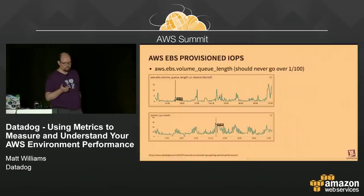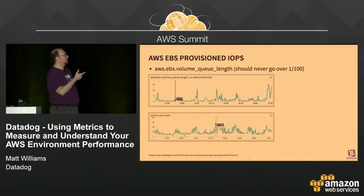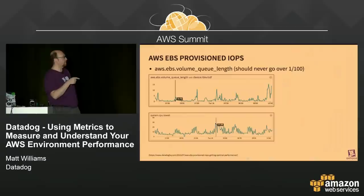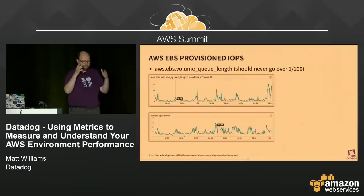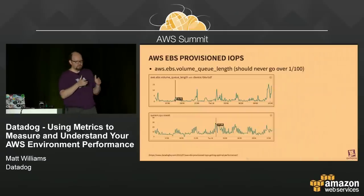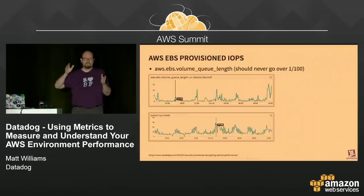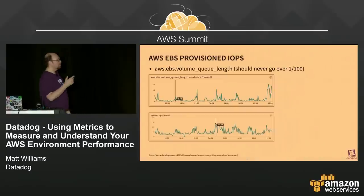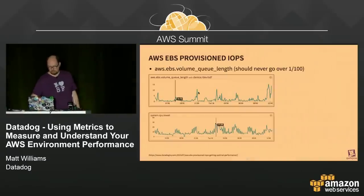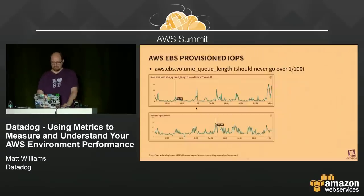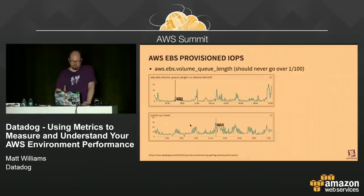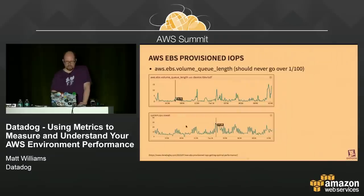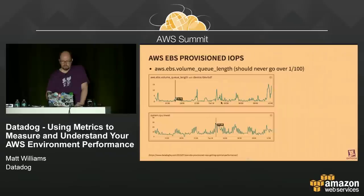When you're dealing with provisioned IOPS EBS, one of the things to look at is AWS EBS volume queue length — it should never be over one. We have a bunch of spikes where it spikes up to five or ten, and every time it does that, there's a correlated CPU IO wait that happens right around the same time. Just by looking at that EBS volume queue length, we can see this kind of pattern. If we were just looking at CPU IO wait, maybe we wouldn't identify that as a problem.